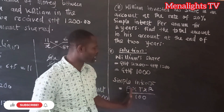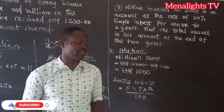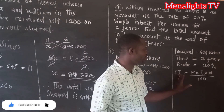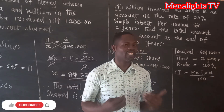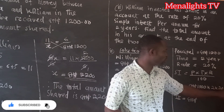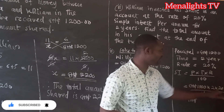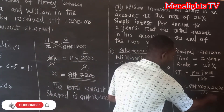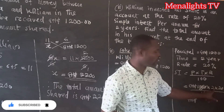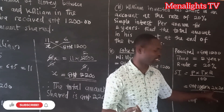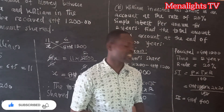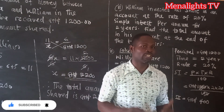The principal is 1,000 cedis, the time is 2 years, and the rate is 20%. So SI = (1000 × 2 × 20) / 100. Cancelling zeros: 2 × 2 = 4, then 40 × 10 = 400. The simple interest is 400 cedis.